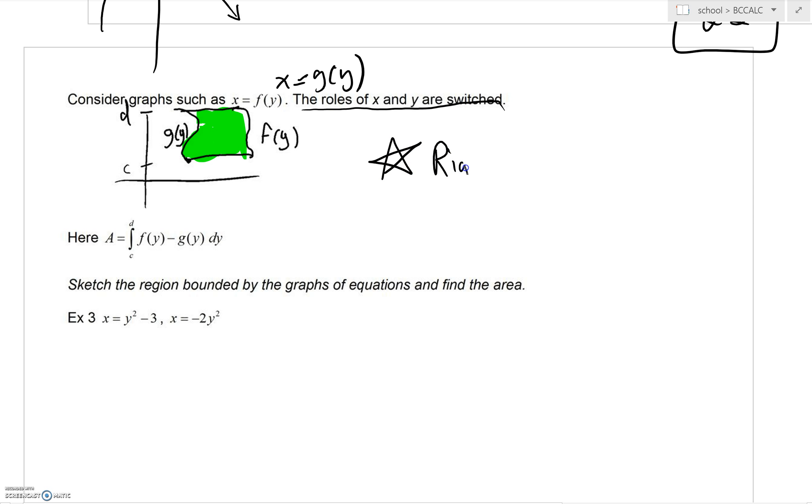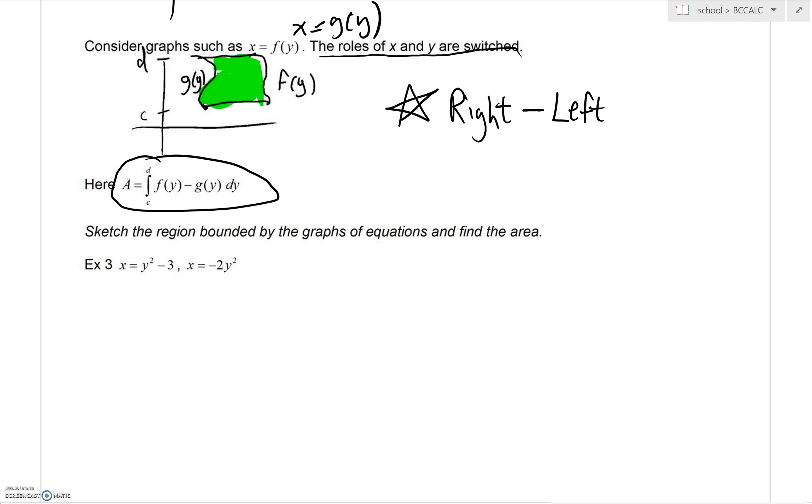When we're integrating in this context, it will always be right minus left. You can envision that we have rectangles being formed, not with the x axis, but with the y. As we have our rectangle that is further away, in this case our f of y minus g of y. It's always right boundary minus left boundary. That's how you will find the area between two curves.